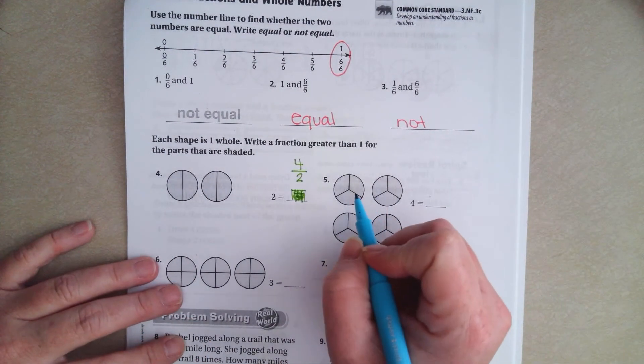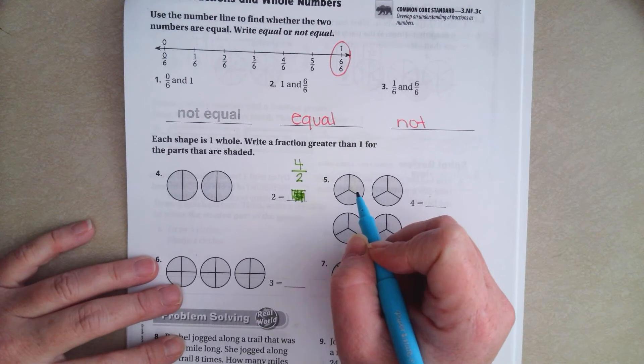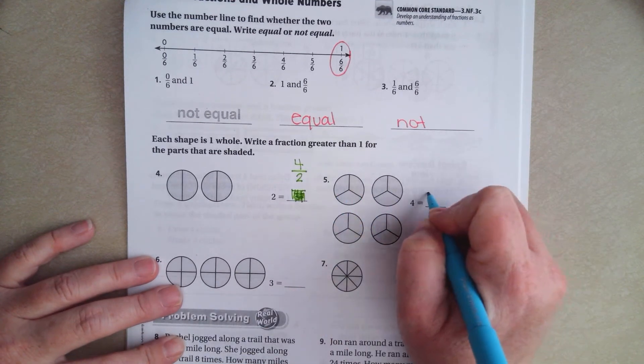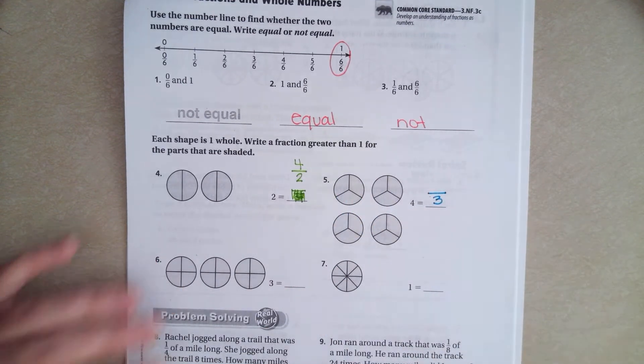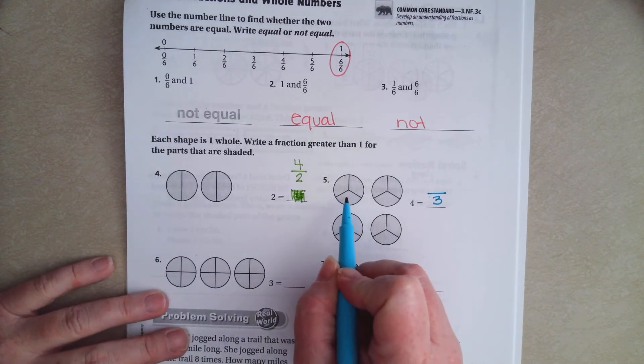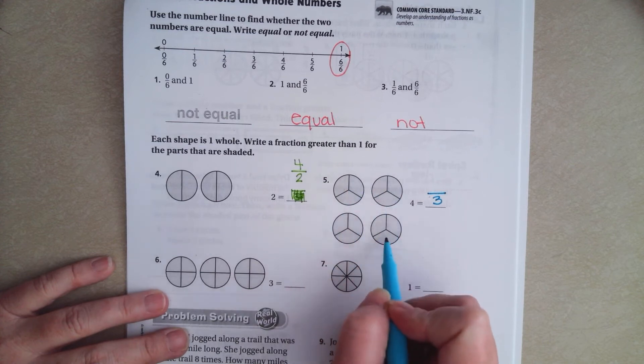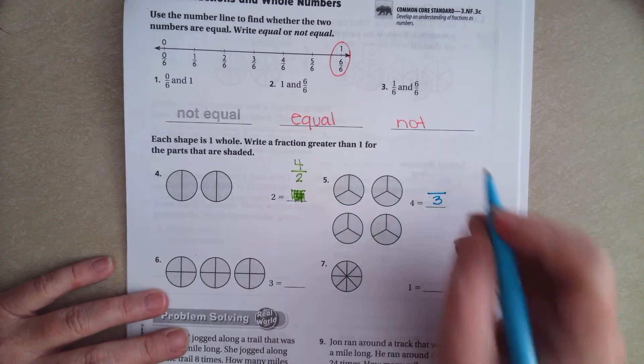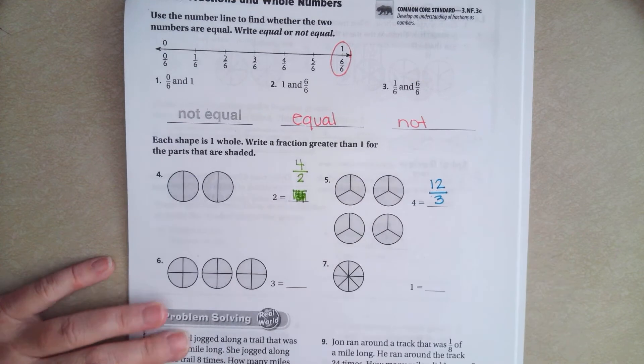So on this one, each one is cut up into 3 pieces. How many thirds do I have colored in? 1, 2, 3, 4, 5, 6, 7, 8, 9, 10, 11, 12.